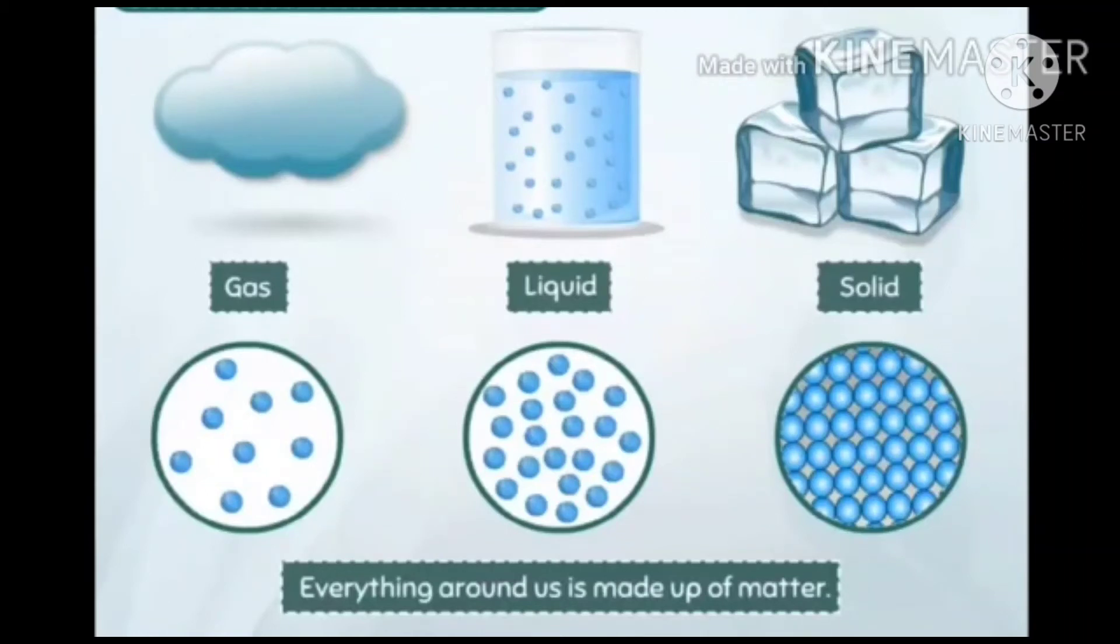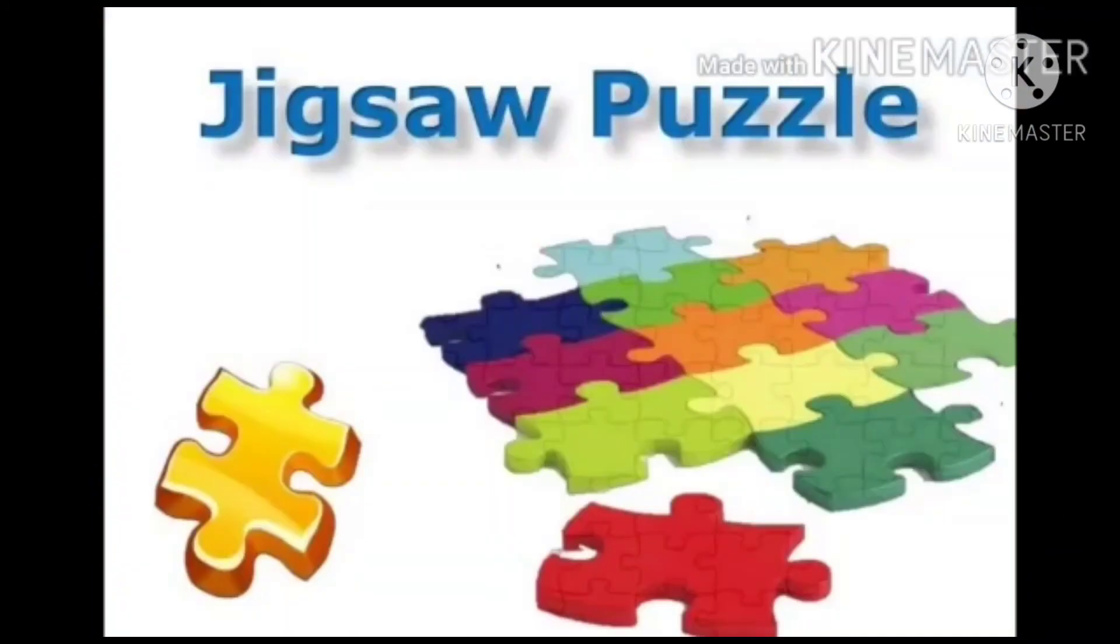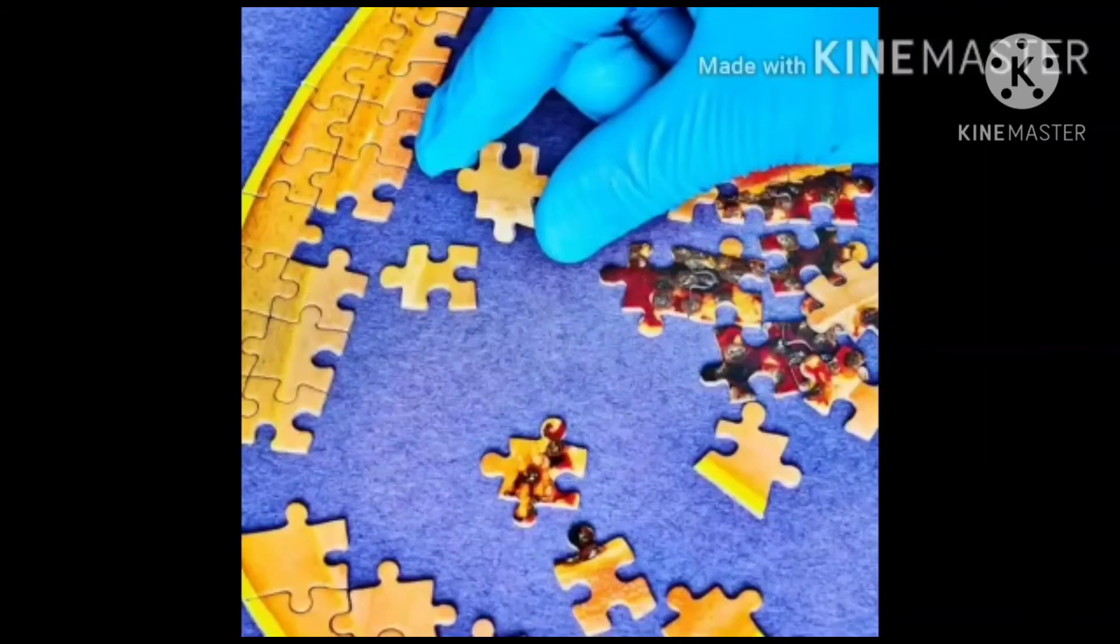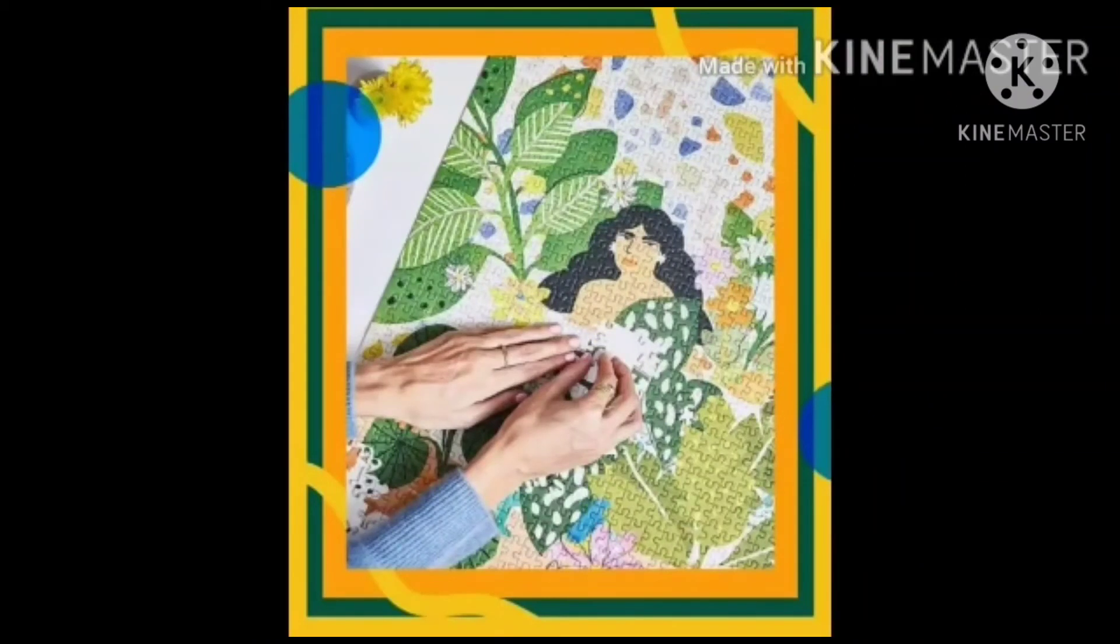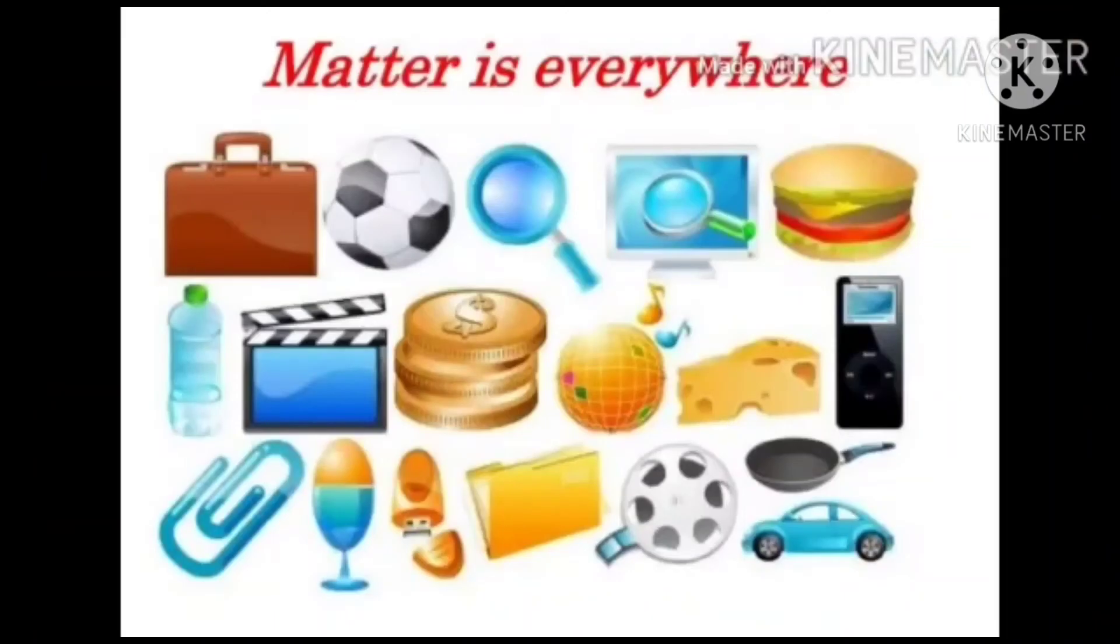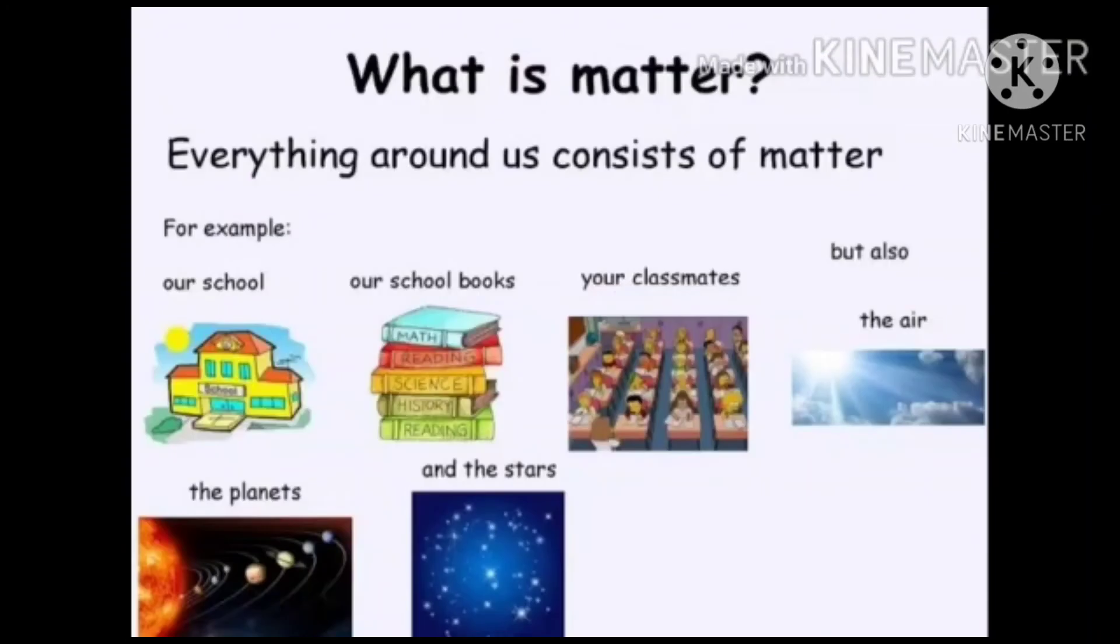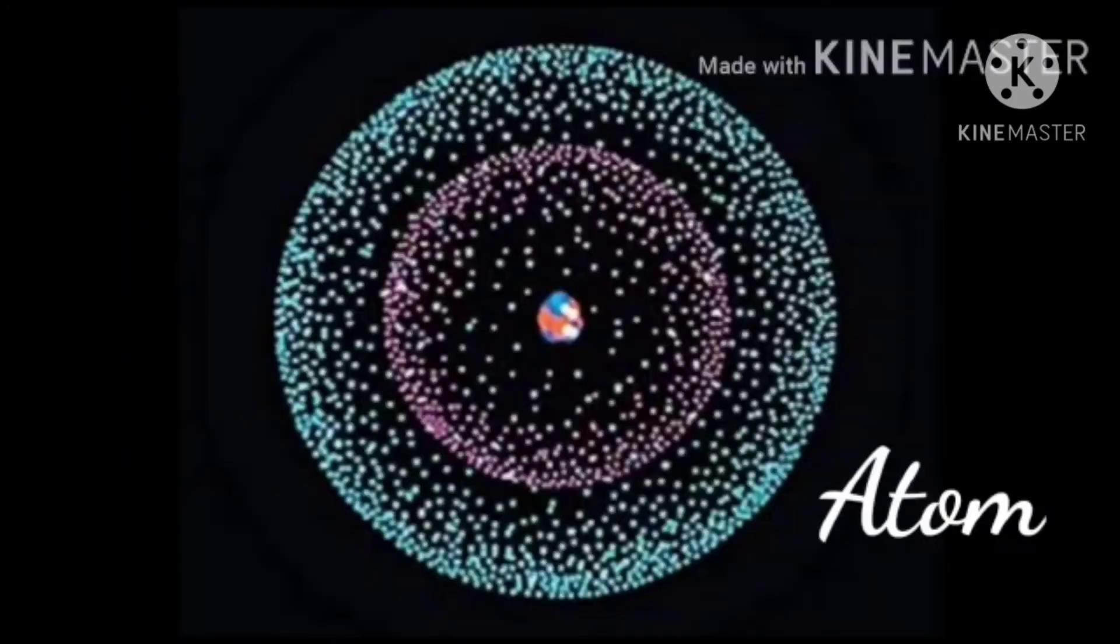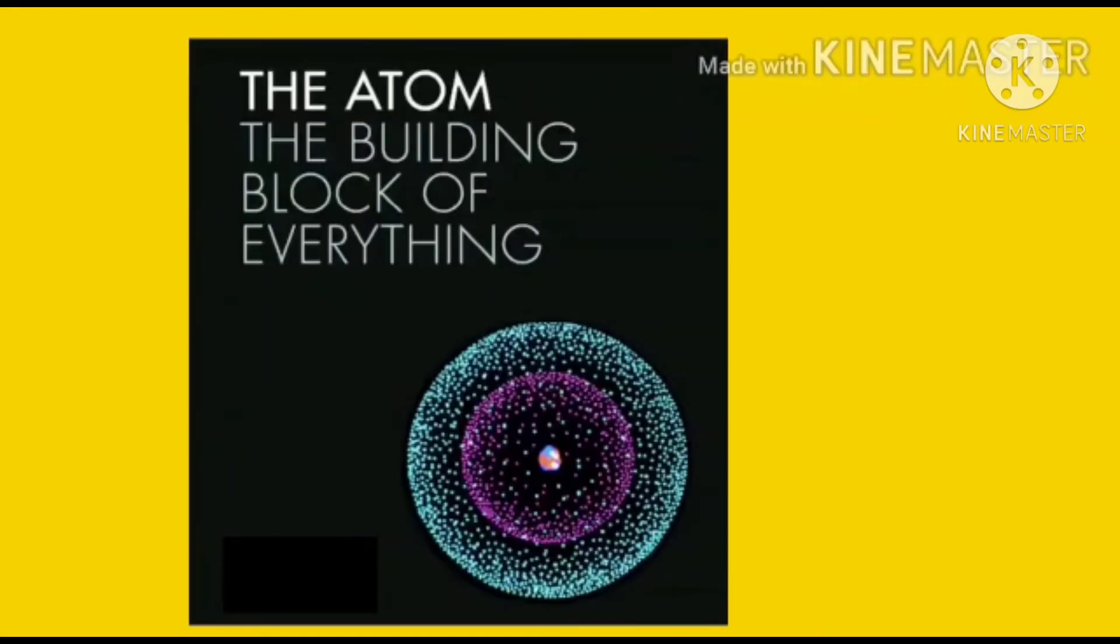Now the question arises, what matter is made up of? Let us understand it with the help of an example. Students, you must have seen a picture puzzle in which different pieces are arranged together to obtain a complete picture. Or we can say the pieces are building blocks of the puzzle. In a similar manner, all matter around us is made up of very tiny particles called atoms. Or we can say atoms are the building blocks of the matter.